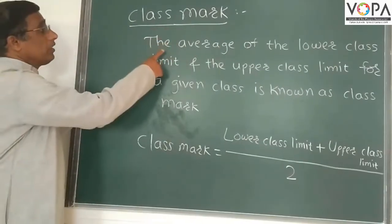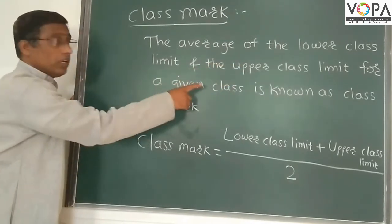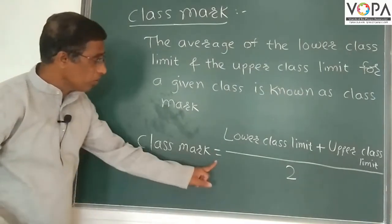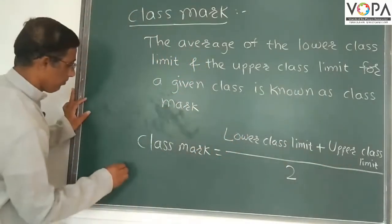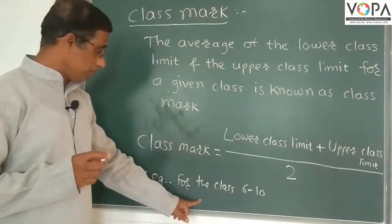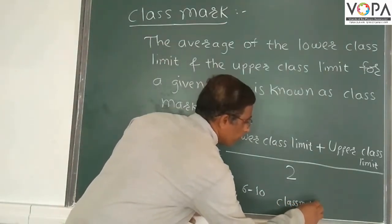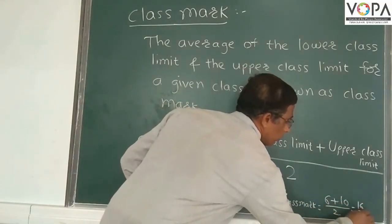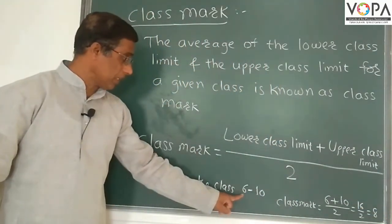Now we take class mark. The average of the lower class limit and the upper class limit for a given class is known as class mark. Class mark is equal to lower class limit plus upper class limit upon 2. For example, for the class 6 to 10, class mark is equal to 6 plus 10 upon 2 means 16 upon 2 is equal to 8. 8 is the class mark of the class 6 to 10.